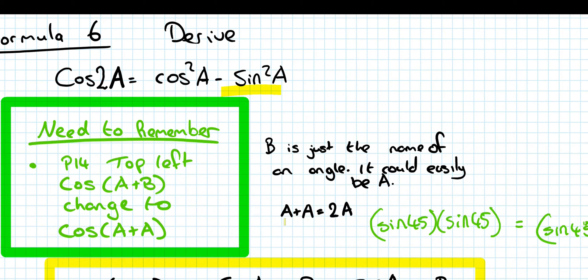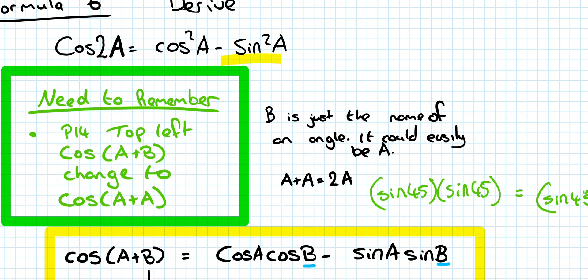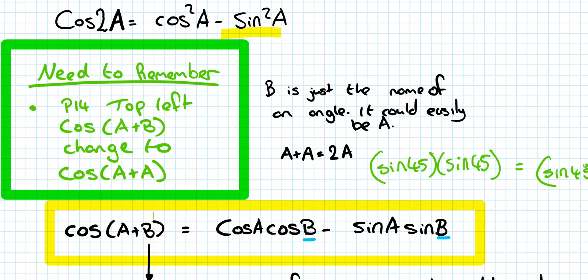What we end up showing is that A plus A equals 2A on the left-hand side. So you write down the formula from the top left-hand side of page 14 of the log tables.